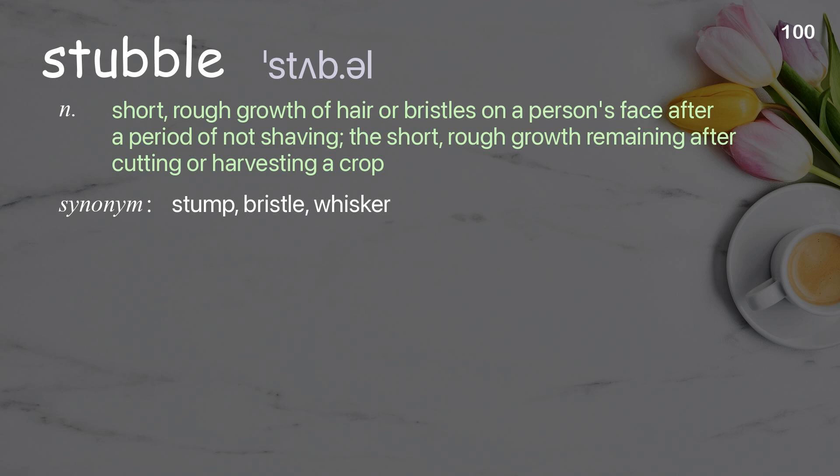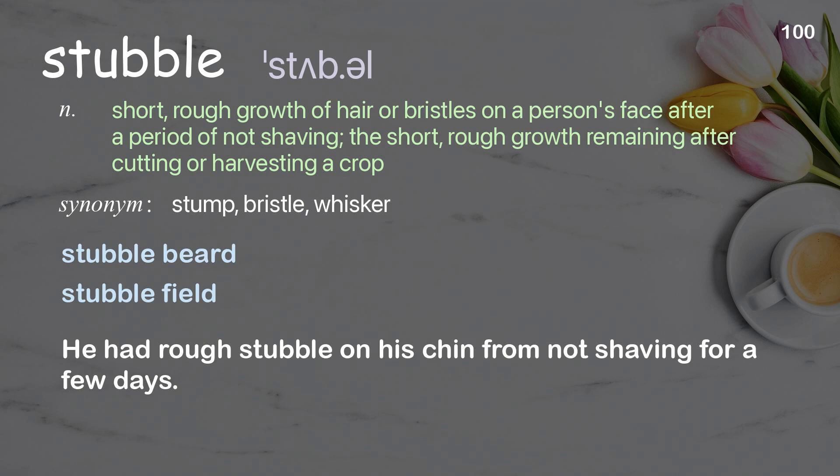Stubble: short, rough growth of hair or bristles on a person's face after a period of not shaving; the short, rough growth remaining after cutting or harvesting a crop. Examples: he had rough stubble on his chin from not shaving for a few days.